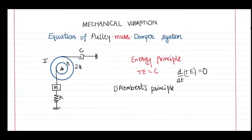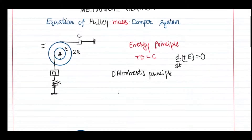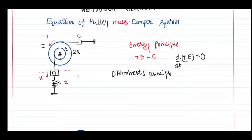For the D'Alembert principle we need to make the free body diagram of our two mass elements — the mass and the pulley, which also has a moment of inertia. Assuming the system is vibrating and at a given instant the mass is going downward, away from the mean position, the mass moves down by x, the spring also changes length by x, and there is a counterclockwise rotation in the pulley by angle theta. In the damper, the velocity will be y-dot.